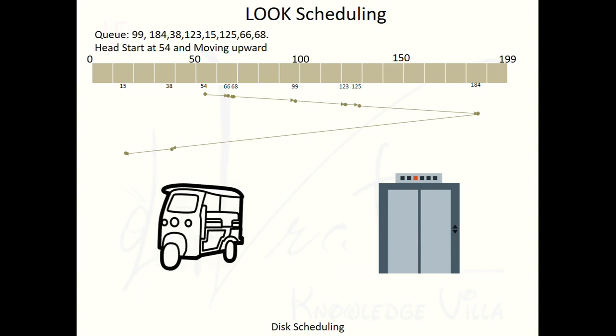In the first trip, the rickshaw travels from Sargam toward Gandhinagar. If no passengers are available beyond Infocity — that is, all passengers have completed their journey at Infocity only — then the rickshaw can turn back from Infocity to Sargam. This logic works where the load is less.